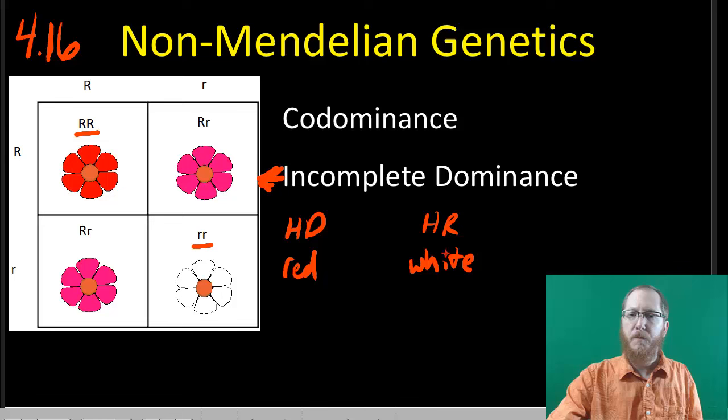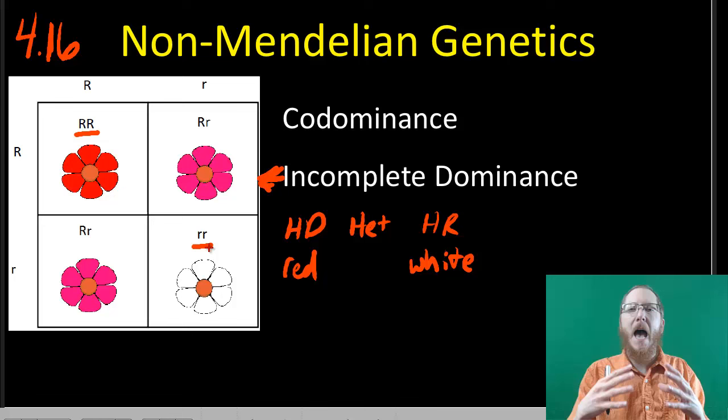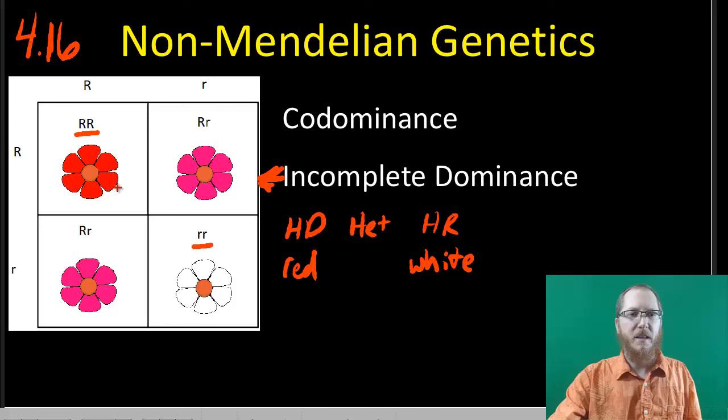The trick is when you get to the heterozygotes. What happens is we get this blending, this mixture — kind of like what the blending theory proposed, though it very seldom actually happens. But in these incomplete dominance situations, it does happen when you get a mix. So if you have red and white, you get pink. If you had black and white, you'd get gray. If you had tall and short, you'd get medium. These heterozygotes in this scenario will be pink.